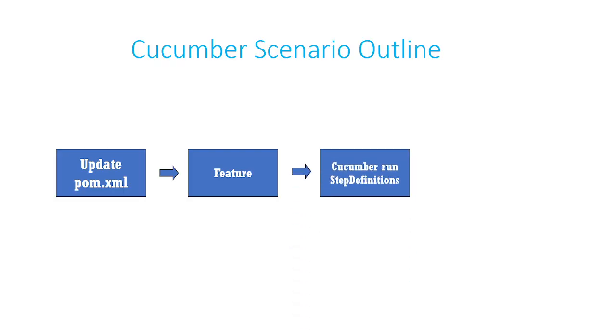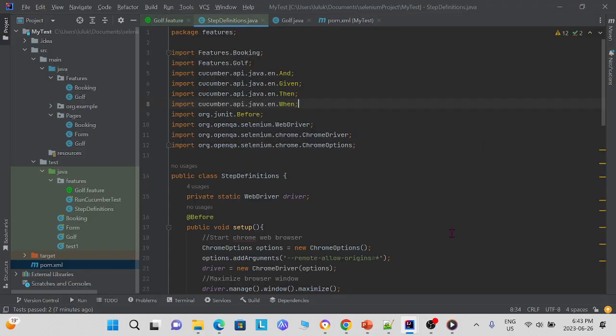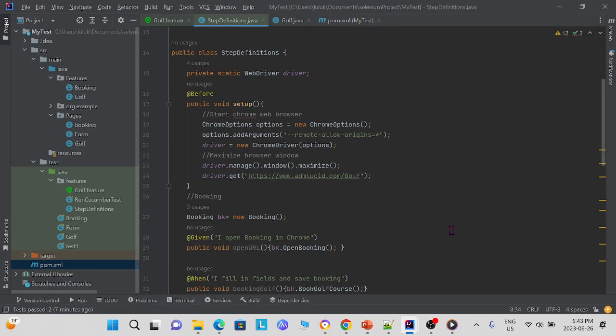Next, we must create a Cucumber run step definitions class. This is an example step definition Java class.